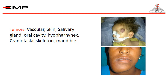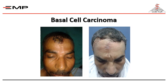Head and neck tumors also fall within plastic surgery, including vascular malformations, skin tumors, salivary gland tumors, oral cavity, hypopharynx, and cranio-maxillofacial skeleton tumors. This is a case of hemangioma in a child, and this is a case of mandibular tumor in an adult. Also shown is a case of basal cell carcinoma of the forehead after excision and reconstruction by rotational flap.